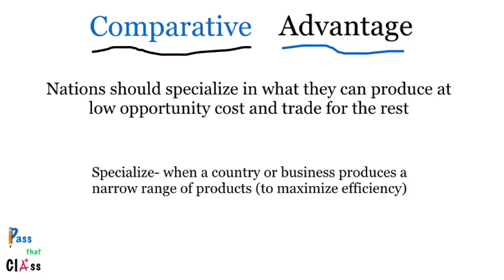Now comparative advantage is a little bit more tricky, but I think you guys will catch on just fine. Comparative advantage is basically when a nation specializes in what they produce best — or at a lower opportunity cost — and they trade for the rest. In case any of you forgot what specialize means, it's basically when a country or business decides to produce a narrow range of products in order to maximize efficiency.